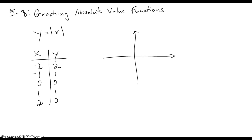If we pop in a negative 2 for x, we're going to get a positive 1, 0 is going to give us 0, 1 is going to give us 1, and 2 is going to give us 2. So if we go over here and chart that, that's going to look like this. Negative 2 is 2, negative 1 is 1, 0 is 0, 1 is 1, and 2 is 2. And the absolute value function always takes on this v-shape.